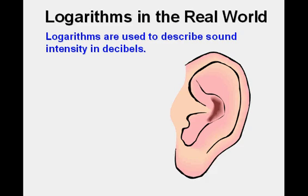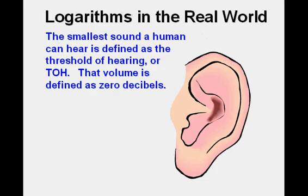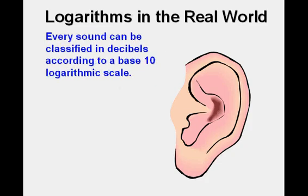Logarithms are used to describe sound intensity in decibels. The smallest sound a human can hear is defined as the threshold of hearing, or TOH. That volume is defined as zero decibels. Every sound can be classified in decibels according to a base 10 logarithmic scale.